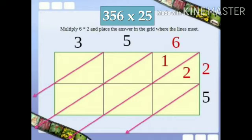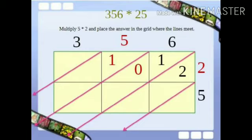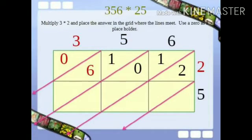Now multiply 6 into 2 and place the answer in the grid where the lines meet. Again fill the numbers in the triangle. So 5 times 2 are 10. So write 1 in the upper triangle, 0 in the lower triangle. Then multiply 2 into 3 and place the answer in the grid where the lines meet. Use the 0s as a placeholder. So 3 times 2 is equal to 6. So you can write 0 in the upper triangle, 6 in the lower triangle.